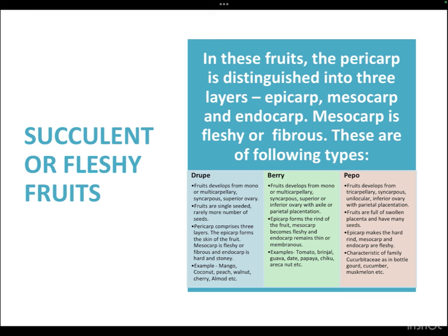Pepo fruits develop from tricarpillary syncarpus unilocular inferior ovary with parietal placentation. The fruits are full of pulp and placenta and have many seeds. The epicarp makes the hard leathery rind; mesocarp and endocarp are fleshy. The characteristic family is Cucurbitaceae, like bottle gourd, cucumber, and musk melon.